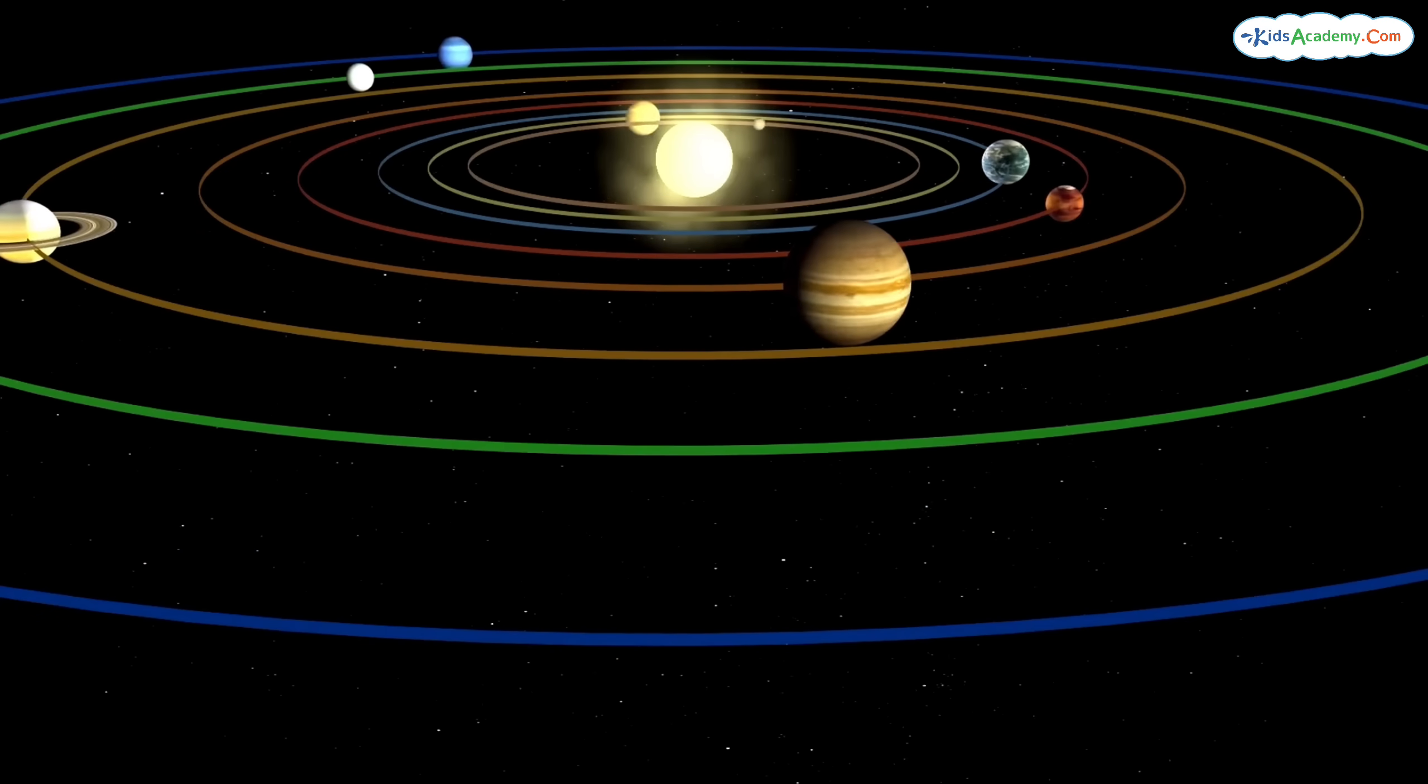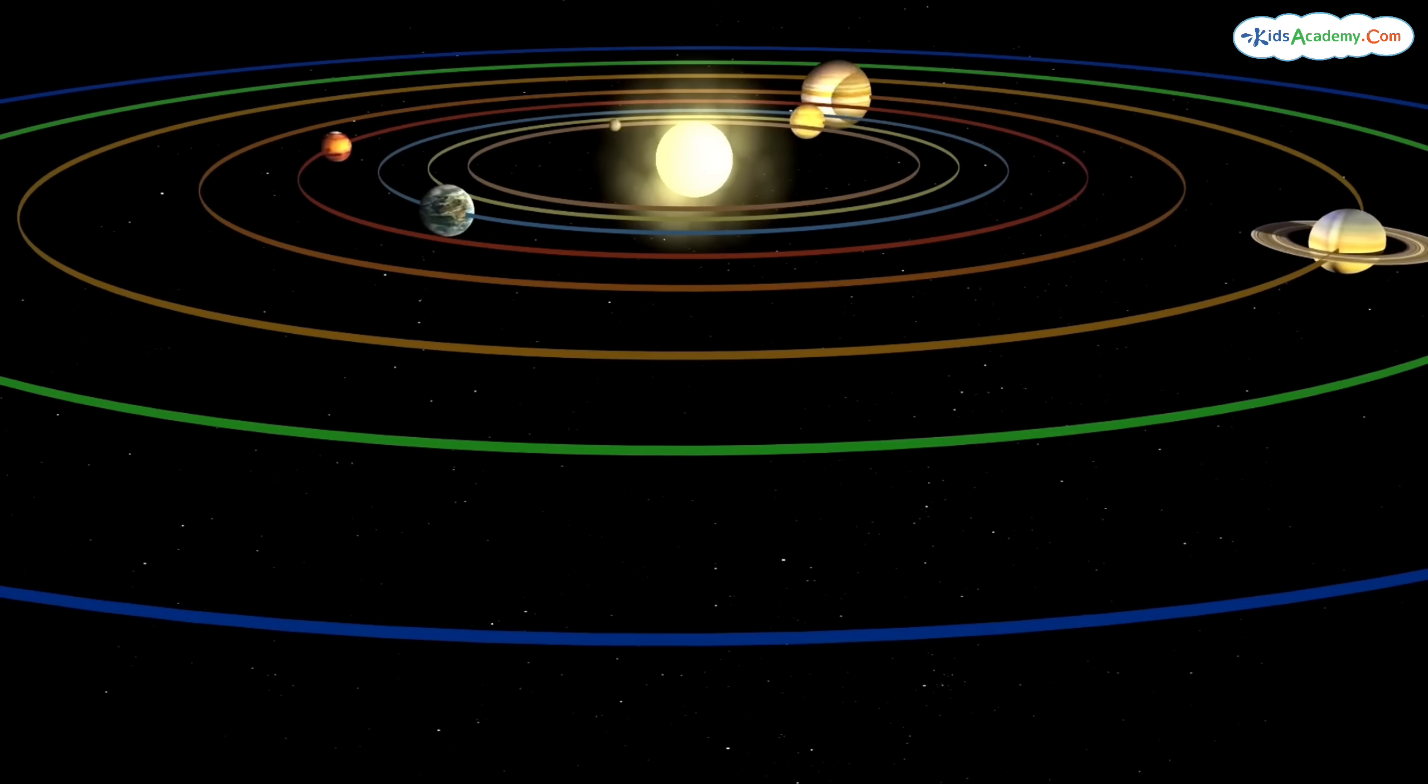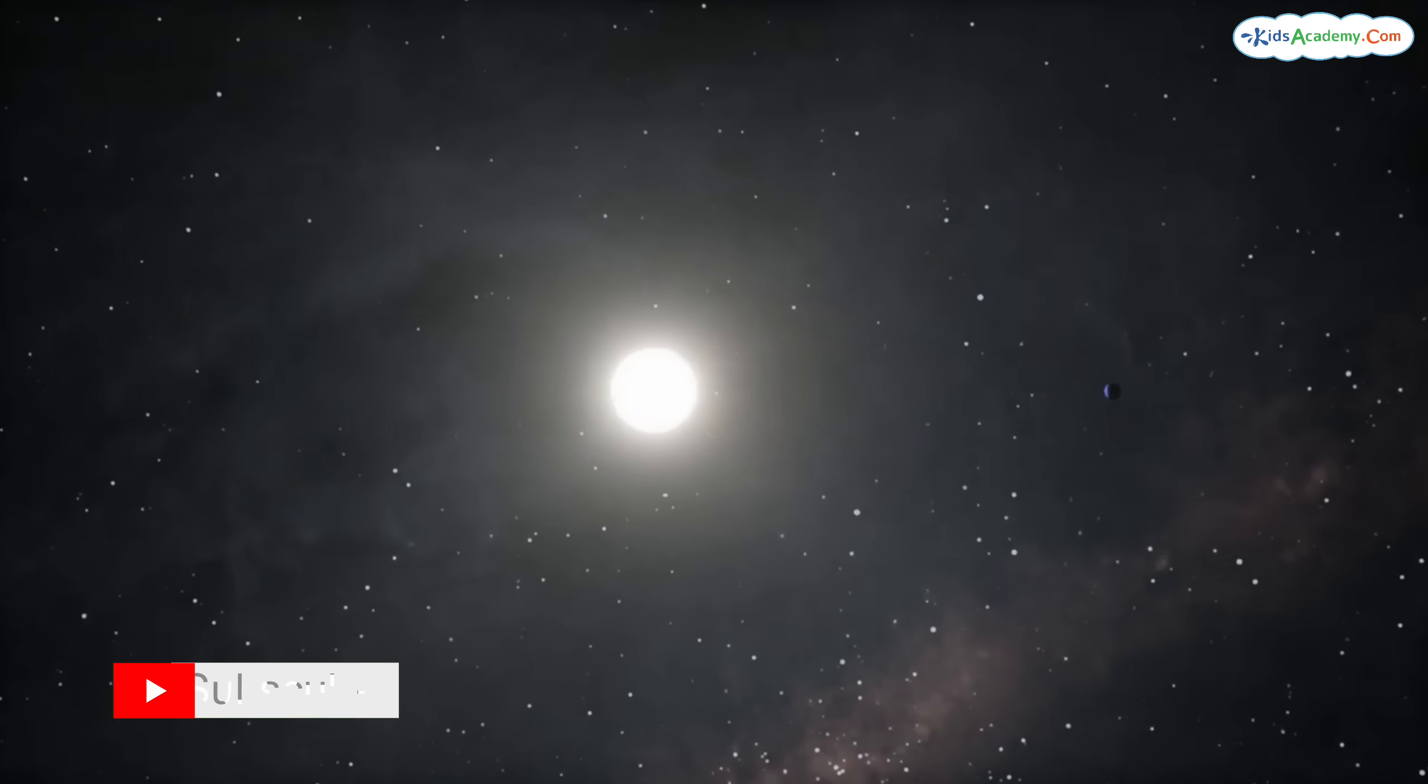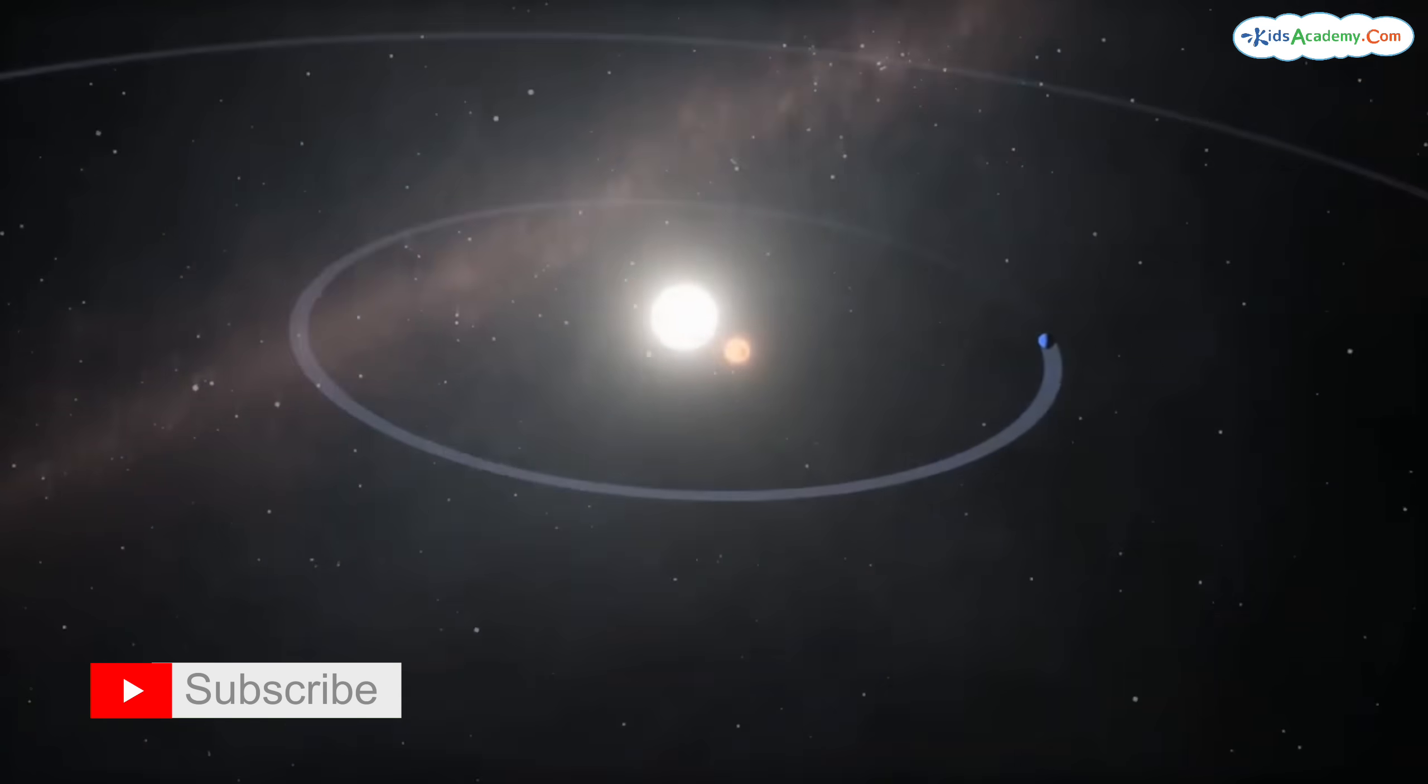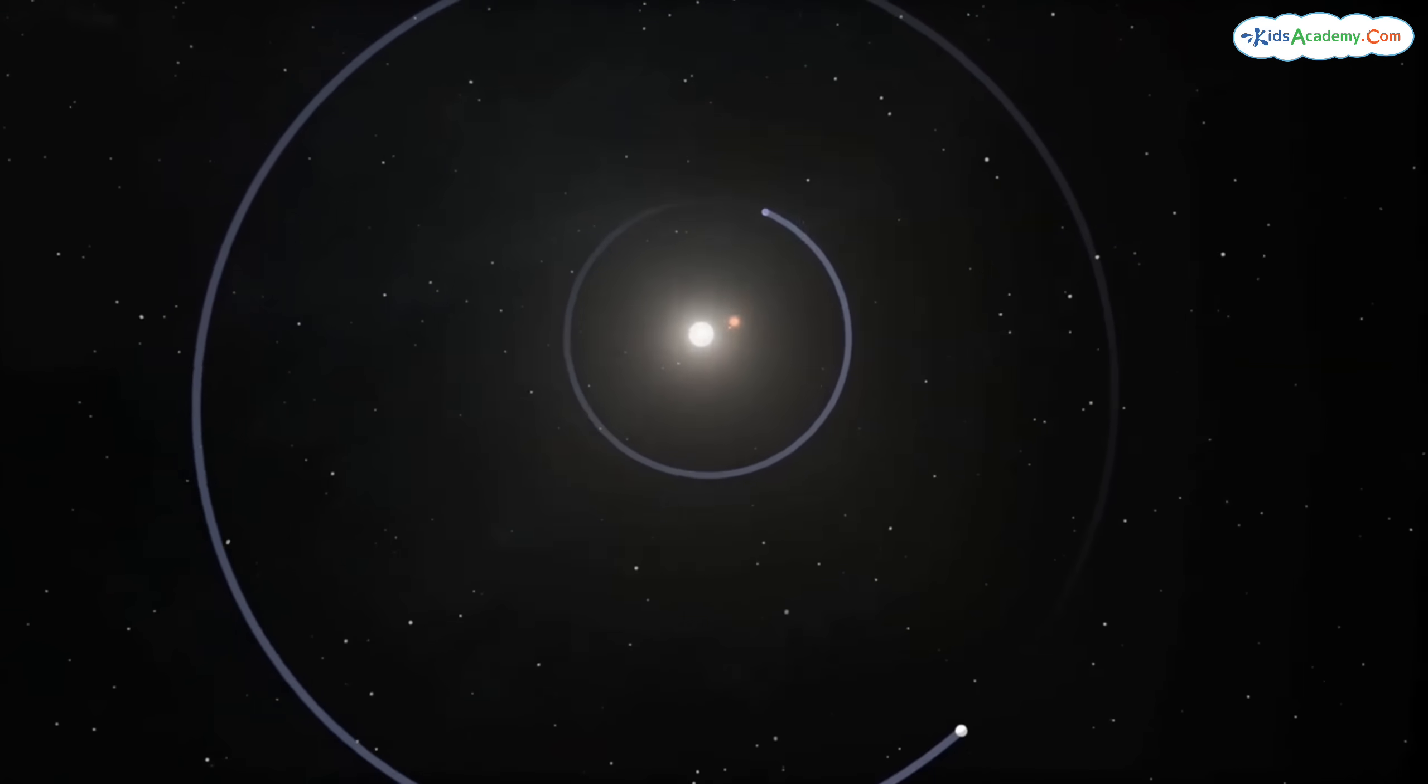Now, let's talk about other solar systems. Did you know that our solar system is just one of many out there in the universe? That's right. Other stars have their own families of planets, swirling around them just like ours does around the sun.